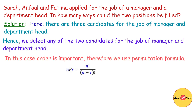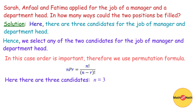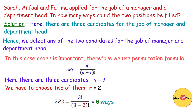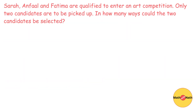There are three candidates, so n equals 3. We have to choose two of the three candidates, so r equals 2. Substituting these values into the formula, we get 3P2 equals 3 factorial over (3 minus 2) factorial. On simplification, we get 6 ways.